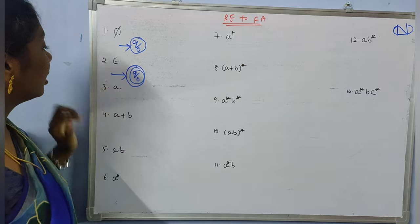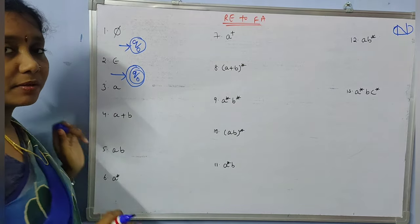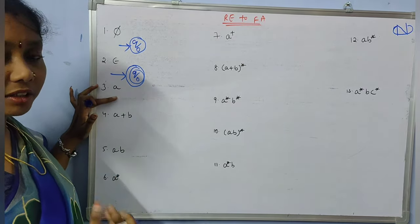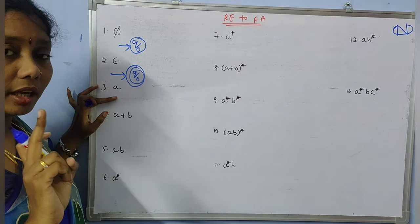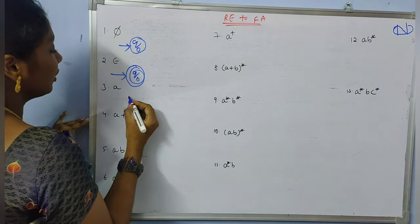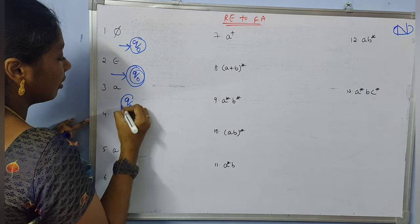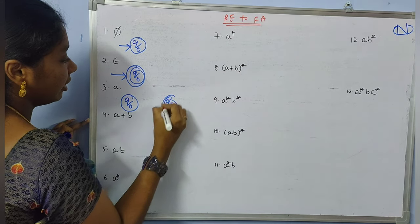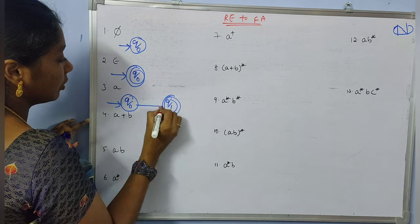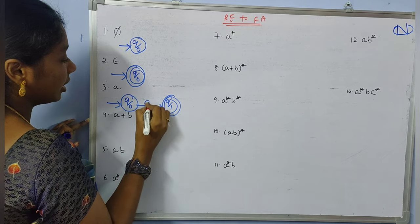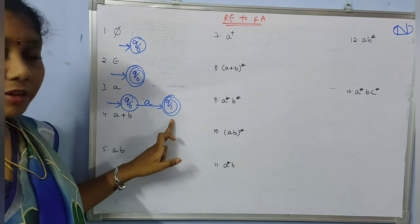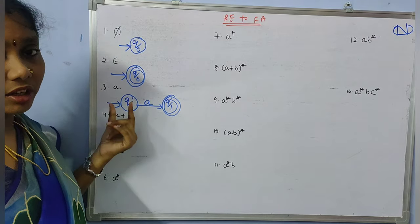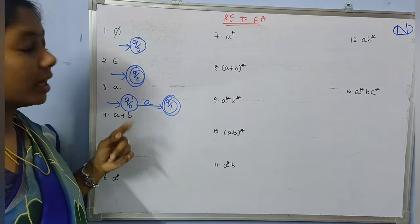Coming to the third one, simply 'a'. The finite automata generated for this regular expression should accept only the string 'a' itself. From the initial state to the final state, the only string accepted should be 'a' itself.